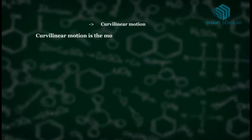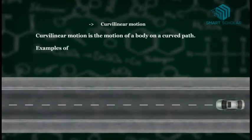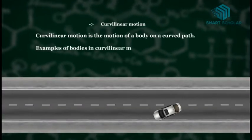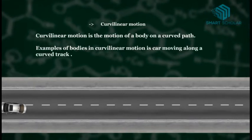Curvilinear motion is the motion of a body on a curved path. An example of curvilinear motion is a car moving along a curved track.